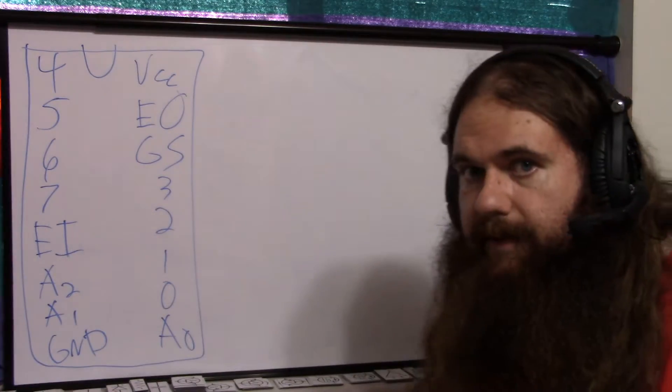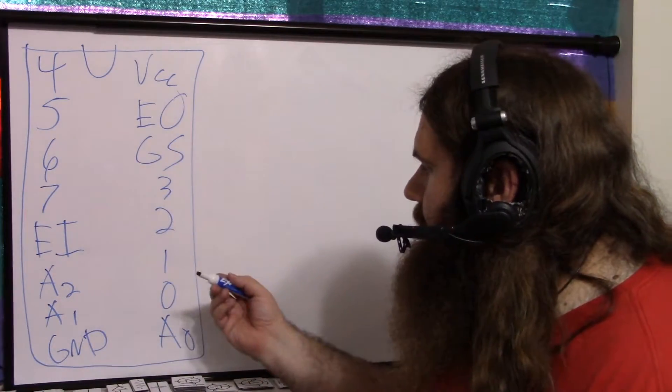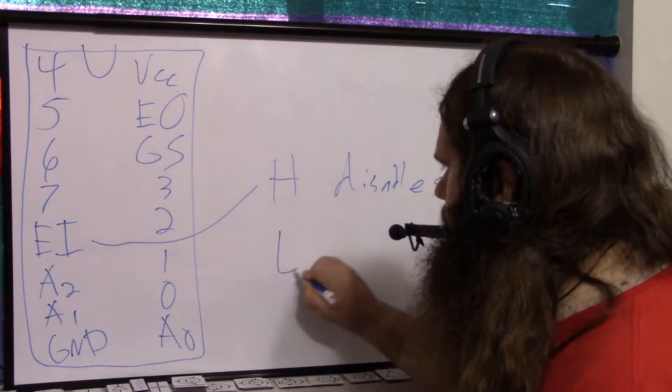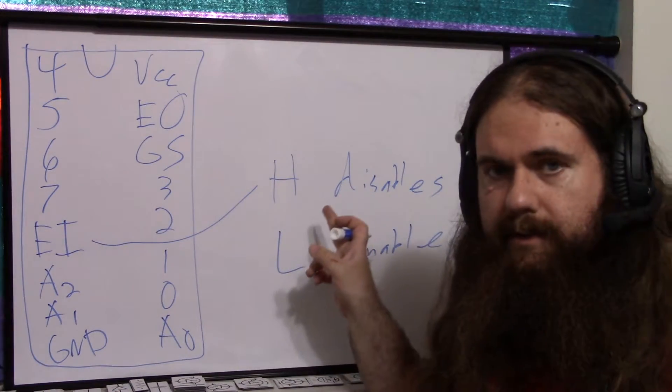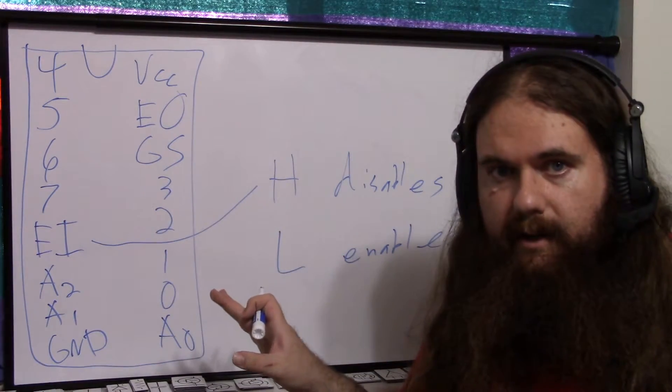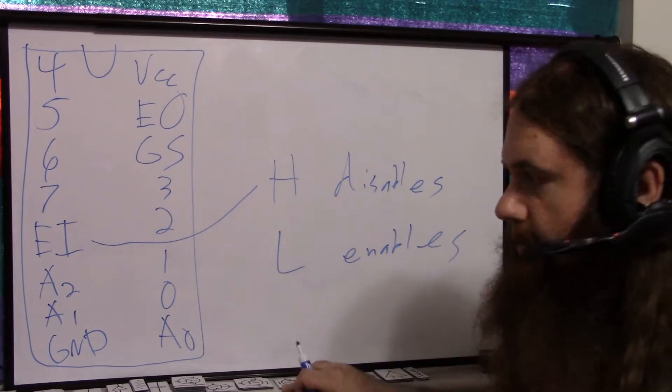then A is telling you the highest priority number input that's on. If GS is high, it's saying this chip is not giving a valid output. EI over here, high disables, low enables. So you can use this to just disable the chip entirely if you want, but it has another purpose.